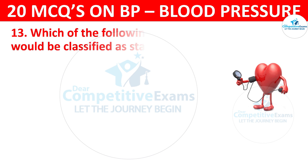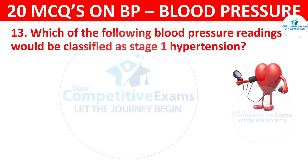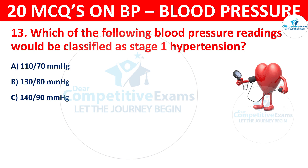Question 13. Which of the following blood pressure readings would be classified as stage 1 hypertension? Your options are: 110/70 mmHg, 130/80 mmHg, 140/90 mmHg, or 120/80 mmHg?